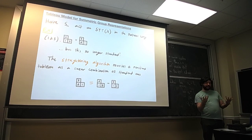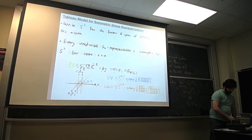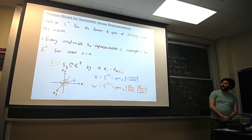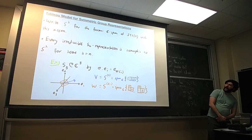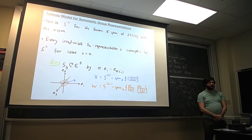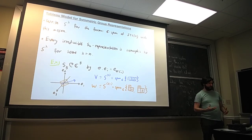So we really do have an action on the standard Young tableaux. If we write S-Lambda for the formal span of the standard Young tableaux of a given shape with this action, every irreducible symmetric group representation is isomorphic to one of those S-Lambdas. This way we actually capture all of the possible representations.